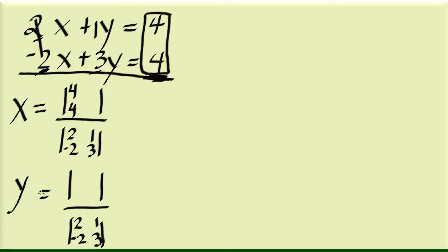For the y numerator, we're not going to be using the y coefficients either. We're going to replace the y coefficients with the constants 4 and 4. Now to complete this last column for x, look down and you see 1 and 3 — pick those up and write them here. And for the y numerator, to complete that column, pick up the numbers 2 and negative 2 and copy them there.